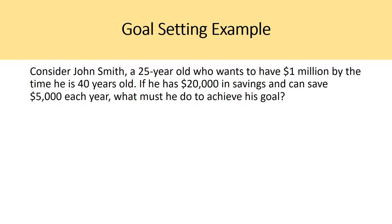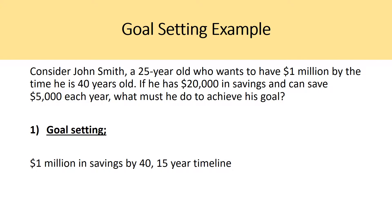Let's consider an example. Consider John Smith, a 25-year-old who wants to have one million dollars by the time he is 40 years old. If he has $20,000 in savings and can save $5,000 each year, what must he do to achieve his goal? Step one, goal setting: his financial goal is $1 million — that's the precise dollar value. The deadline is age 40; he is now 25, so he has 15 years to achieve $1 million in savings.